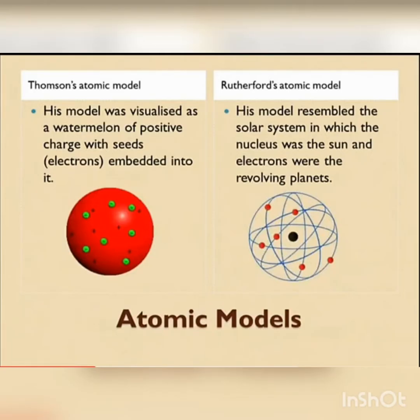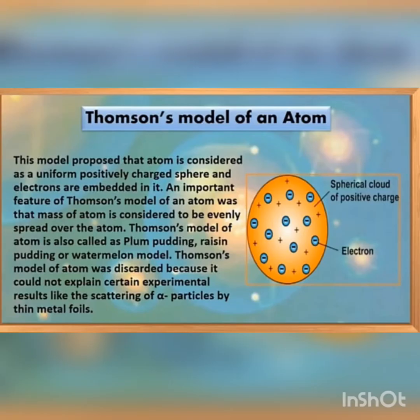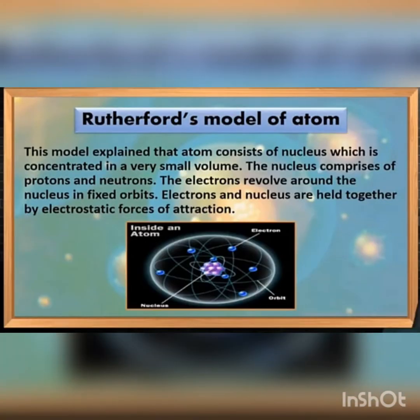The problem was the arrangement of these subatomic particles in the atom. Various scientists proposed various models. Thomson's model was visualized as a watermelon of positive charge with seeds embedded into it. Rutherford's model resembled the solar system, in which the nucleus was the sun and the electrons were revolving planets. Rutherford's model consists of a nucleus at the center comprising protons and neutrons, with electrons revolving around the nucleus in fixed orbits, held together by electrostatic force of attraction.